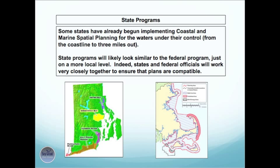Some states have already begun implementing Coastal and Marine Spatial Planning for the waters under their control, from the coastline to three miles out. State programs will likely look similar to the federal program, just on a more local level. Indeed, states and federal officials will work very closely together to ensure that plans are compatible.